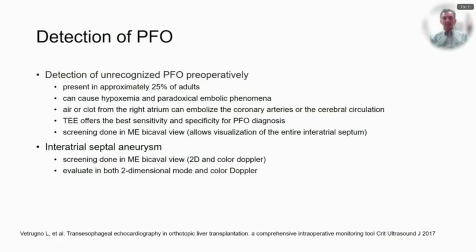If LVOT obstruction is secondary to an underfilled left ventricle caused by right ventricular failure, focus would be on right ventricular support to promote forward flow to the left side of the heart. An undiagnosed PFO can cause hypoxemia and paradoxical embolic phenomena when right atrial pressure exceeds left atrial pressure. Air or clots can embolize to the coronary arteries, particularly the right coronary artery, producing hypokinesia and severe RV dilation, or to the cerebral circulation causing neurological compromise. A mid-esophageal bicaval view should be used with the transducer angle rotated between 90 and 110 degrees and the probe turned clockwise; the interatrial septum should be examined with and without color flow, since atrial septal aneurysms may be associated with interatrial shunts.